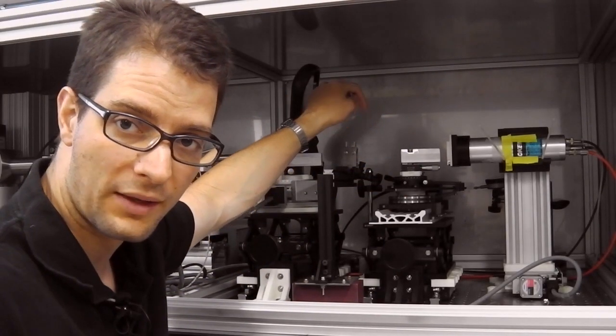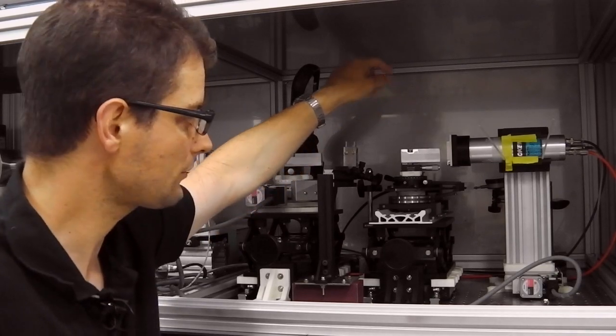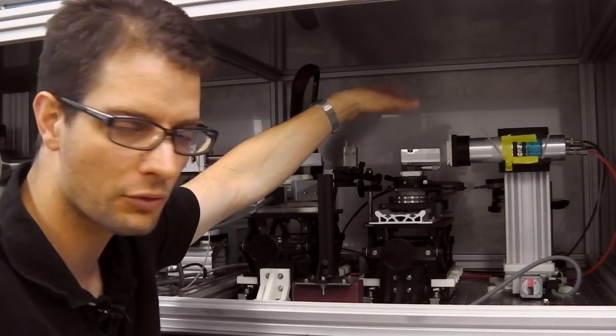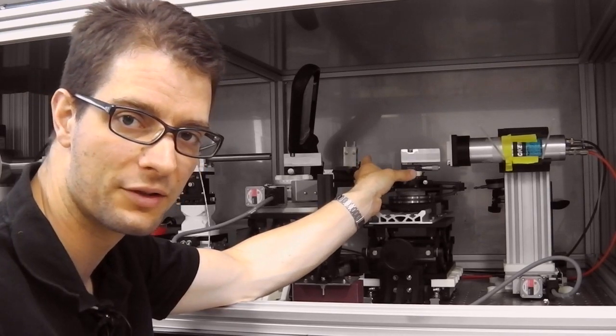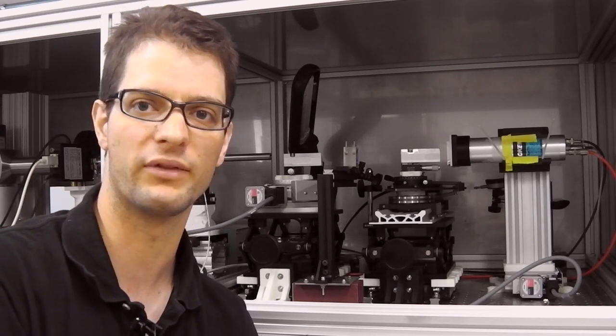We can analyze the ultra small angle scattering pattern using a second one of these channel cut crystals, which again acts like an angle filter. So with this crystal we can look at one scattering angle at a time. By very accurately rotating this crystal, we can stepwise analyze the small angle and ultra small angle scattering pattern of our sample.